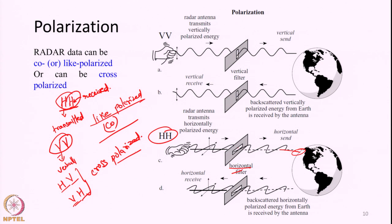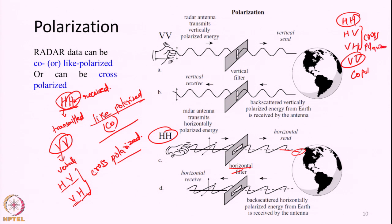Essentially, if you combine these, microwave systems can operate at HH, HV, VH, and VV. HH and VV are co-polarized, and HV and VH are cross-polarized. Some systems have the capability of measuring all these — transmitting in both H and V and receiving in both H and V — giving rise to 4 different images.